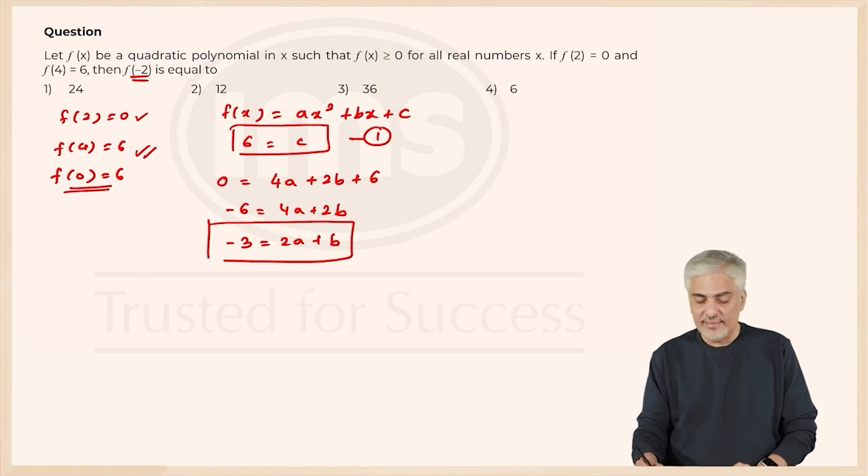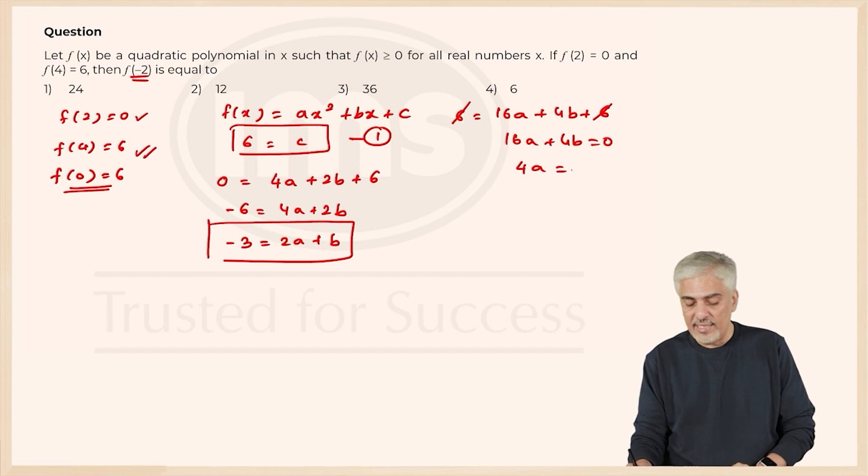Now I have to use f of 4 is 6. So I will get 6 is equal to f of 4. So 16 a plus 4 b plus 6 is 6, 6 cut. So I get 16 a plus 4 b is 0 divided by 4. So I get 4 a is equal to minus b. We have got 4 a is equal to minus b.